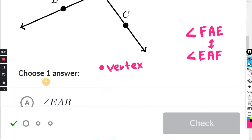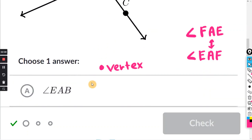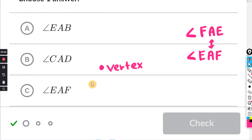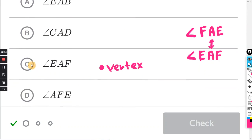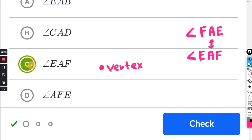They're asking us for one answer, F, A, E, or E, A, F. And that is answer C, E, A, F.